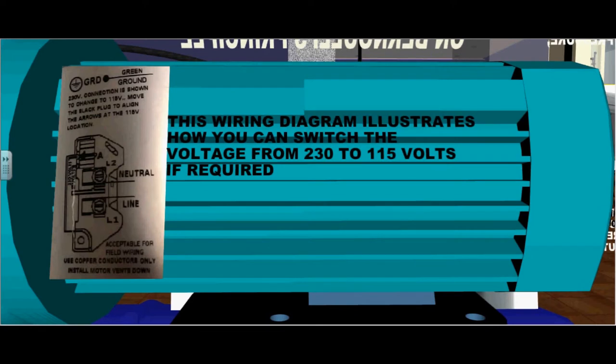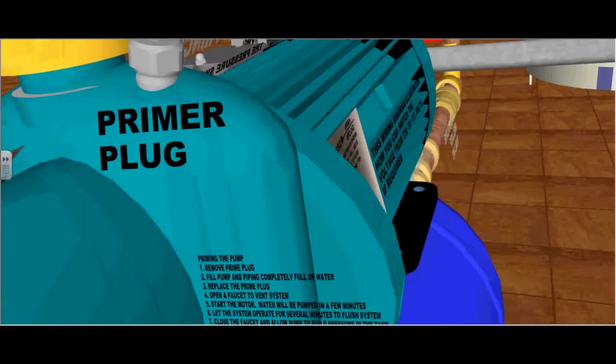This wiring diagram illustrates how you can switch the voltage from 230 to 115 volts if required. It is usually stamped right on the motor of the pump.